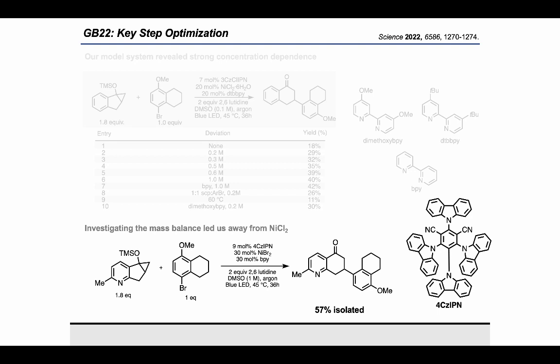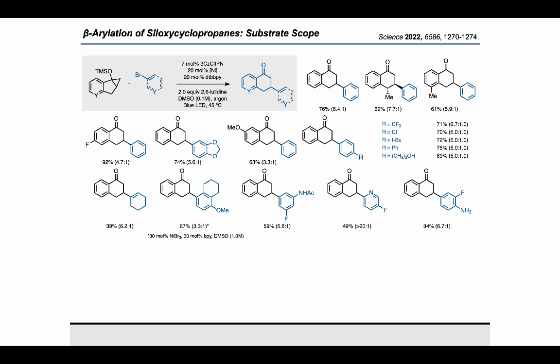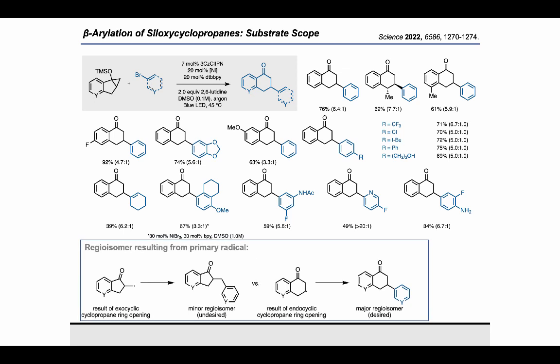One big switch we made was switching from 3CZ-Cl-IPN to 4CZ-IPN, a less oxidizing photocatalyst. With a fully optimized method, we could complete the substrate scope, which shows the applicability and generality of the method for a variety of substrates. For all of the substrates shown, conjugate addition strategies would fail due to the required enone preferring the aromatic tautomer. The ratios shown refer to the presence of a minor regioisomer that, for the more non-polar substrates, was extremely difficult to remove. The minor regioisomer results from the primary radical product of exocyclic cyclopropane ring opening. Luckily, for our more polar synthesis substrate, column chromatography was enough to remove the minor regioisomer, so it wasn't an issue in the synthesis.